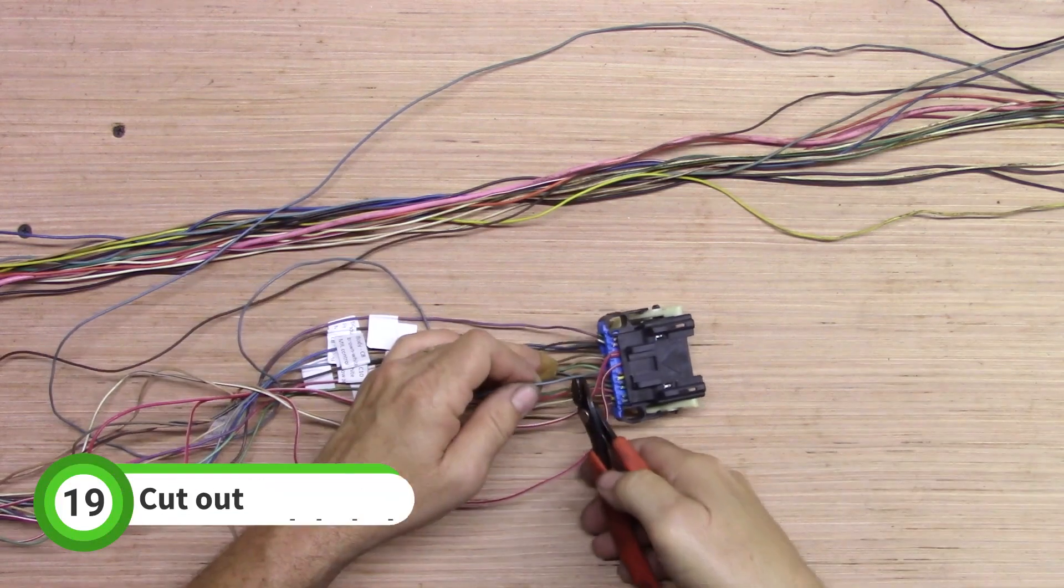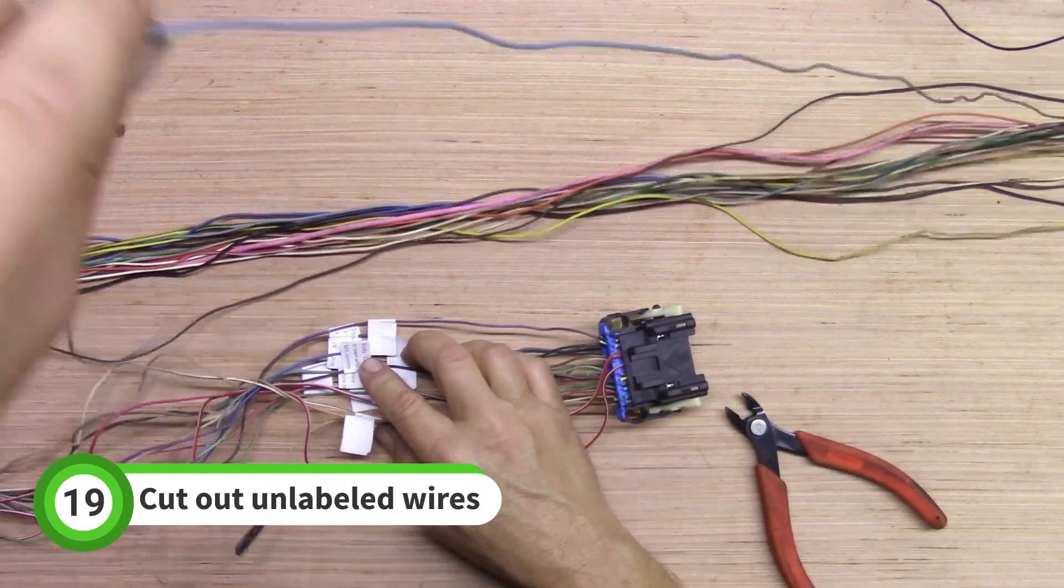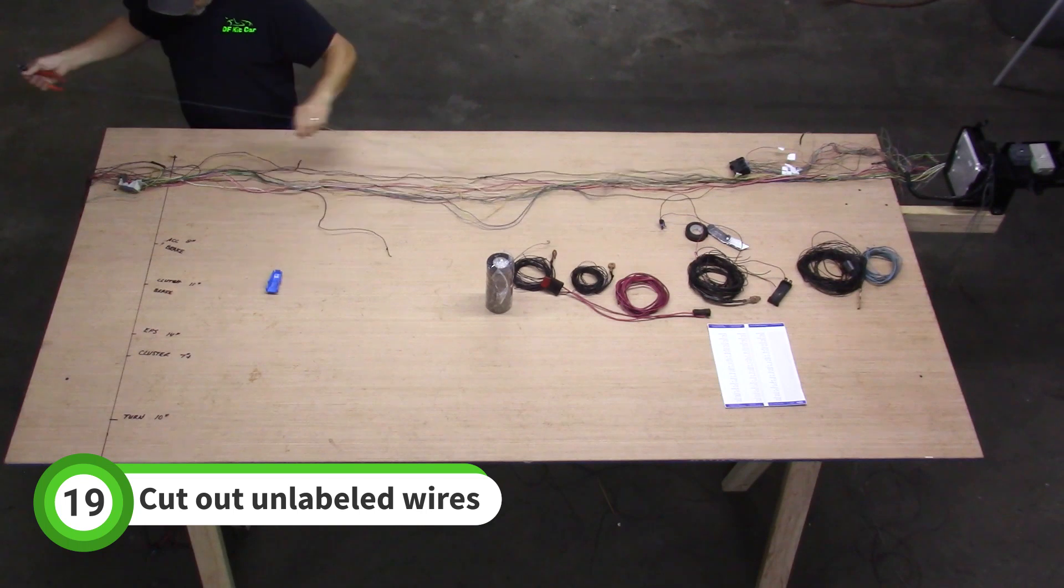There will be wires left over that did not get labeled. These wires won't be used in a Goblin. Cut them near the connector and thin them from the harness.